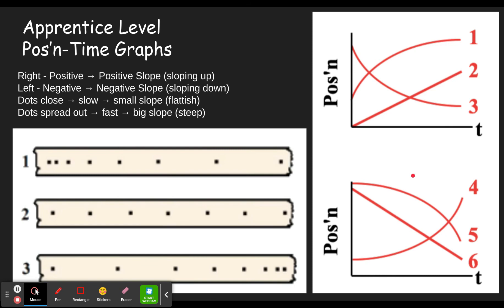On a position-time graph, if something's moving to the right, it's got a positive slope, so it's sloping up. If it's moving to the left, it has a negative slope and it's sloping down. That's going to allow you to eliminate half of the choices for each dot diagram.